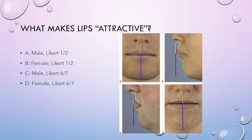Figure A is an example of a male's frontal view picture that received a Likert score of one or two, a score given to a highly attractive perioral region. Figure B is a lateral view of a female who received a Likert score of one or two. Figures C and D are pictures of a male and female respectively who both received Likert scores of six or seven, indicating unattractive perioral regions.